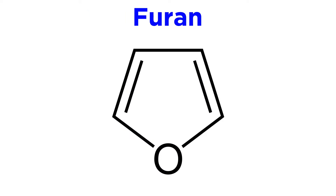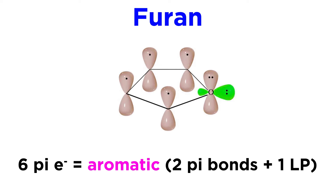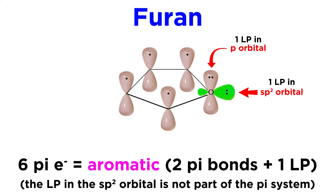The first heterocycle we will look at is furan. This is a five-membered ring with one oxygen atom and two pi bonds. We must understand that furan is aromatic, given that one of oxygen's lone pairs is part of the pi system, allowing it to be fully conjugated, and there is a total of six pi electrons, which satisfies Hückel's rule.